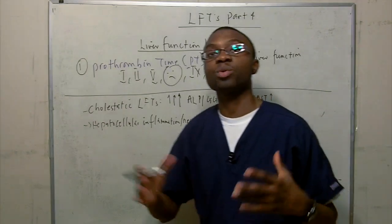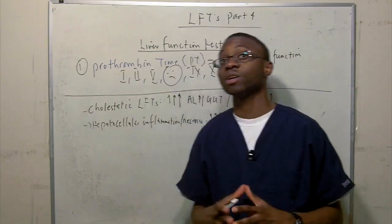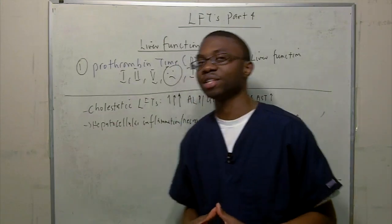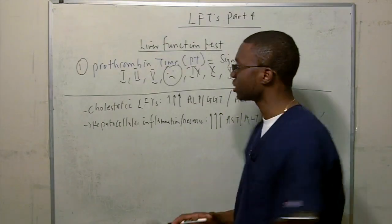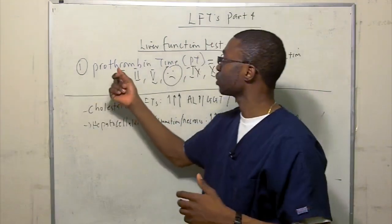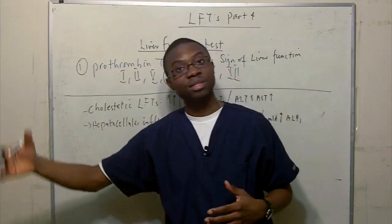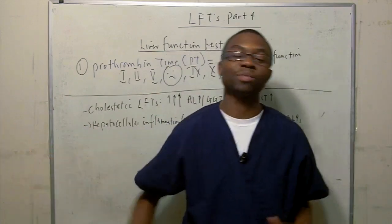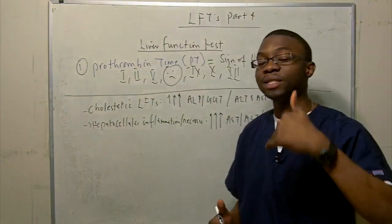But if your PT time is prolonged, that means you're missing one of these cofactors. To fully understand that, you need to watch the coagulation cascade video. Once the liver is dead, none of these coagulation factors are made. The time it takes for prothrombin to be broken down into thrombin — which eventually makes a clot — becomes much longer. So patients with liver failure are going to have an elevated PT time.